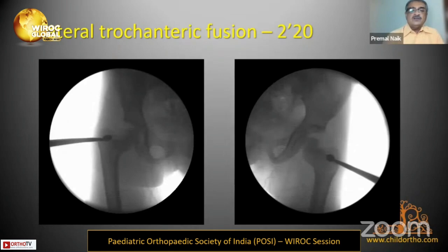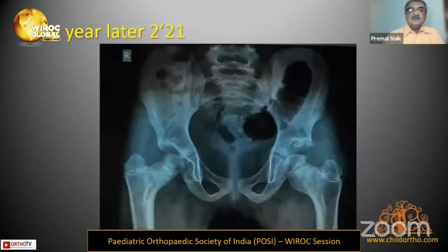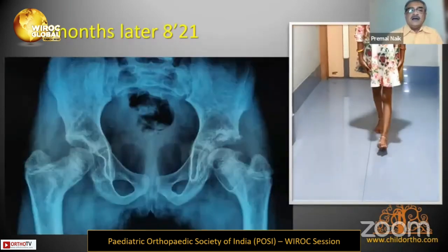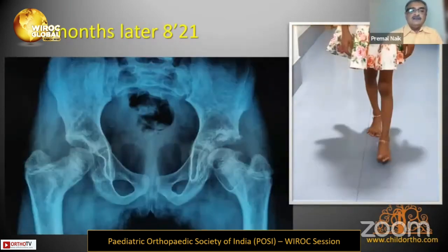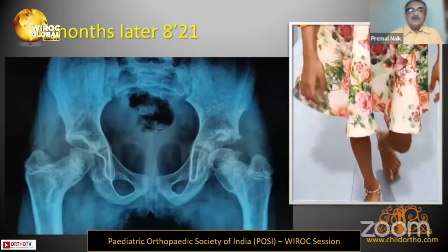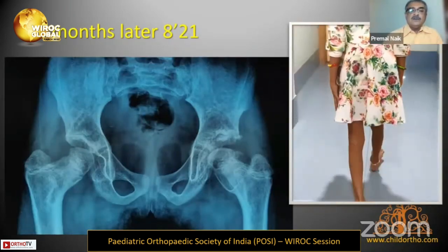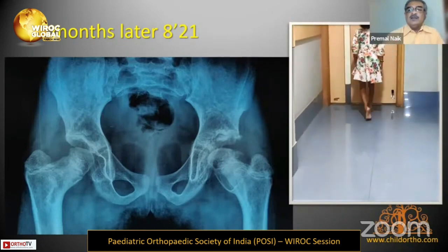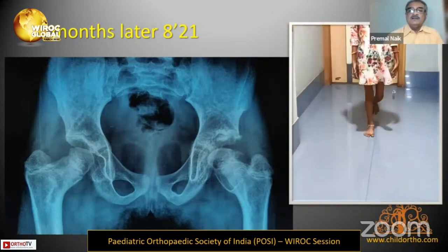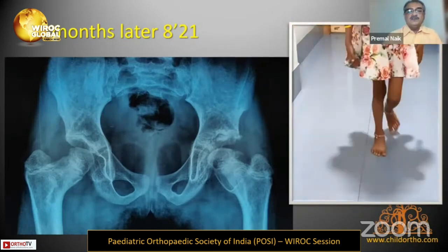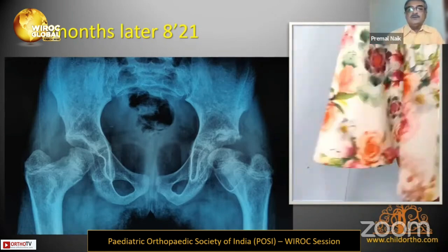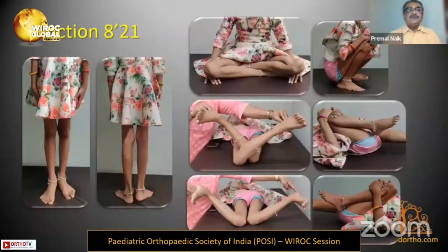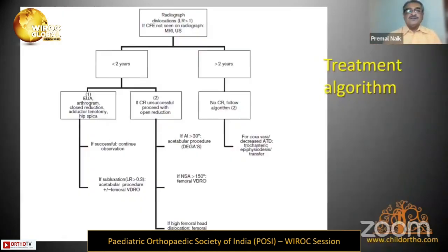Drilling and scooping of the trochanteric physis was done. A year later, and at 18 months, there is trochanteric fusion but the femoral epiphysis is not fully developing. Her gait is absolutely normal at this point, though she may need some procedures in the future.